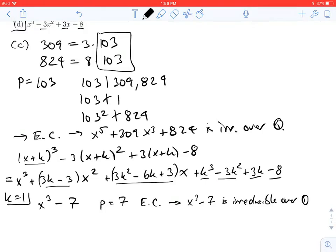But x^3 - 7 is just a shift of the original polynomial, so we conclude that x^3 - 3x^2 + 3x - 8 is irreducible over Q.